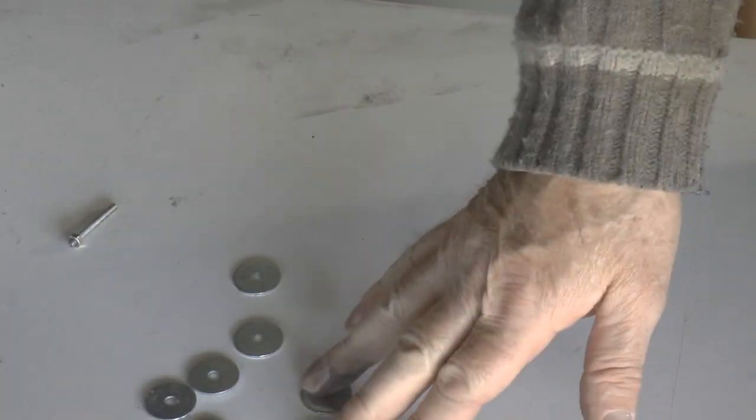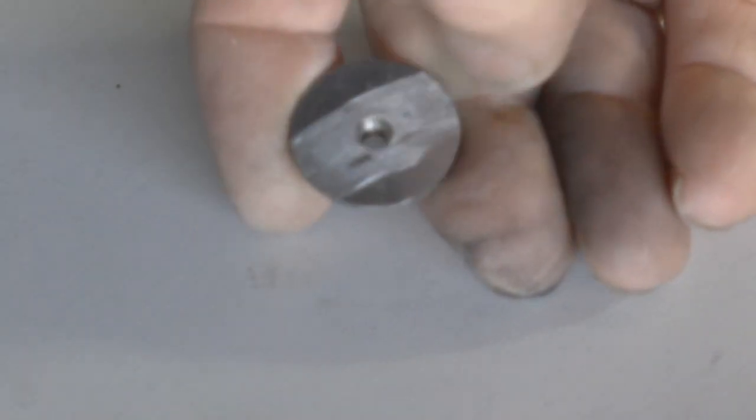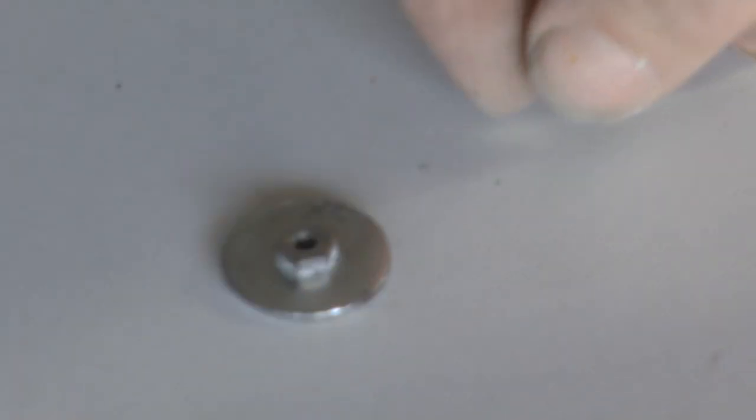Here are some standard M5 what they call penny washers which happen to be about 24.8 millimeters diameter, and what I've done to one of them is to put a hank bush, which is a press nut, into that penny washer. I've modified the washer with a slightly bigger hole and pushed one of those in.